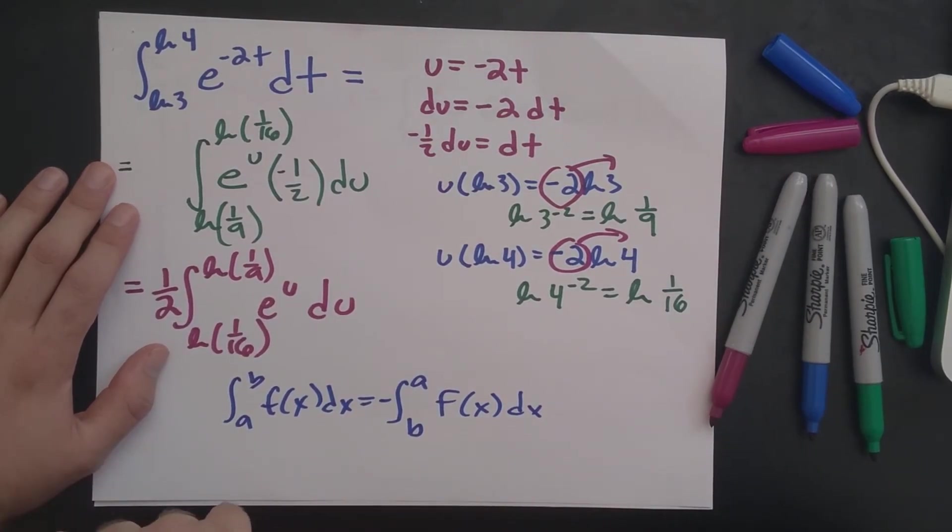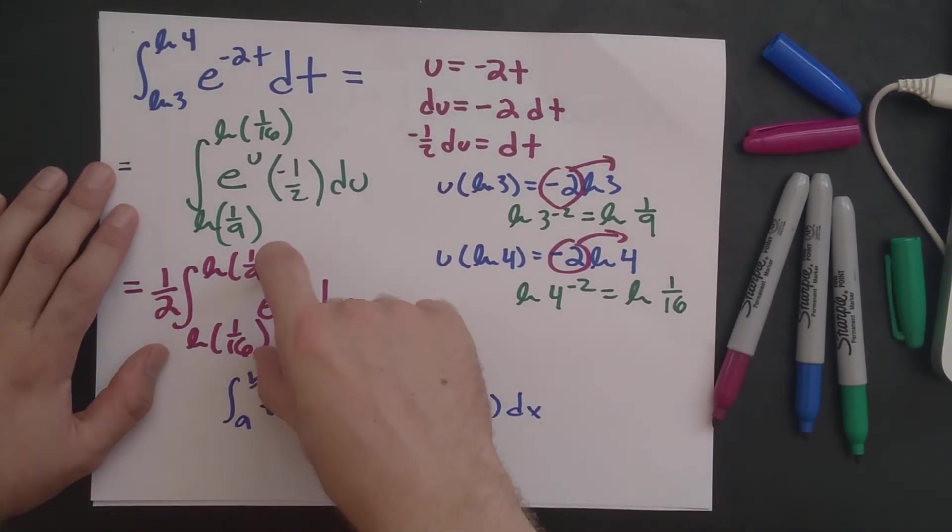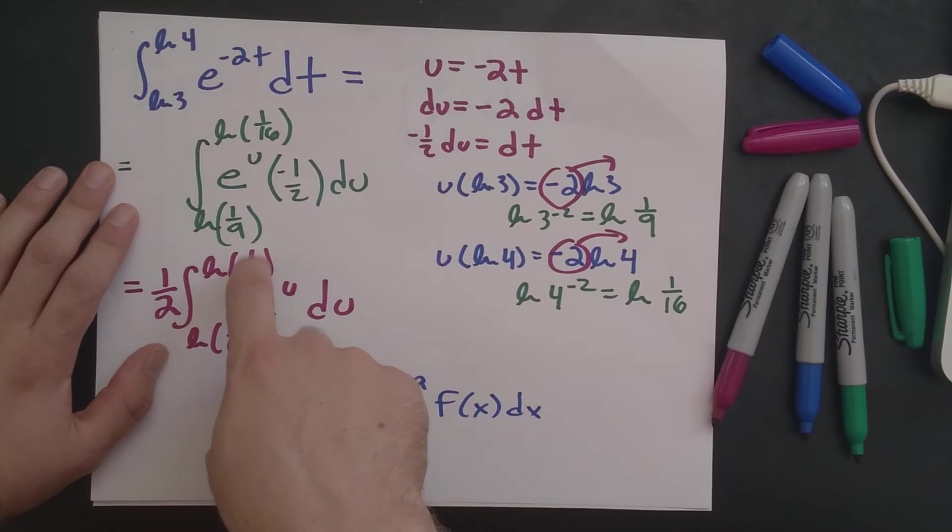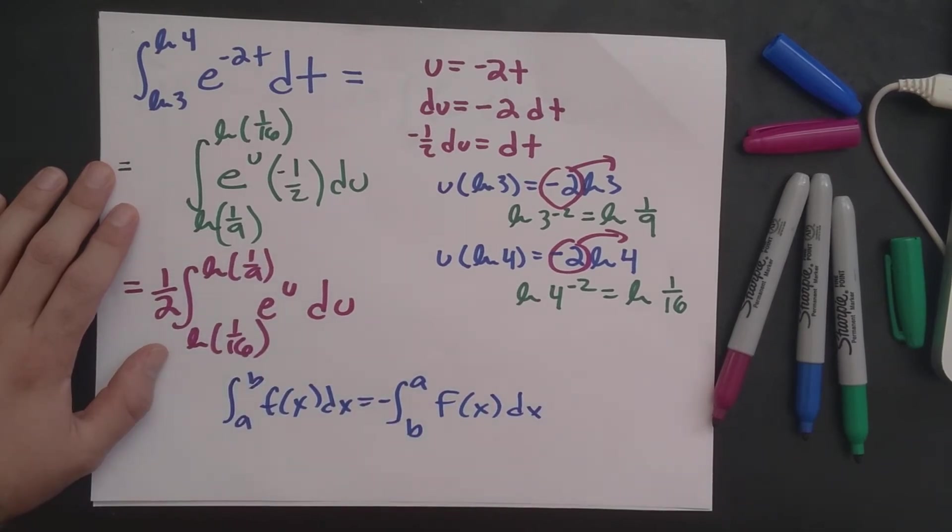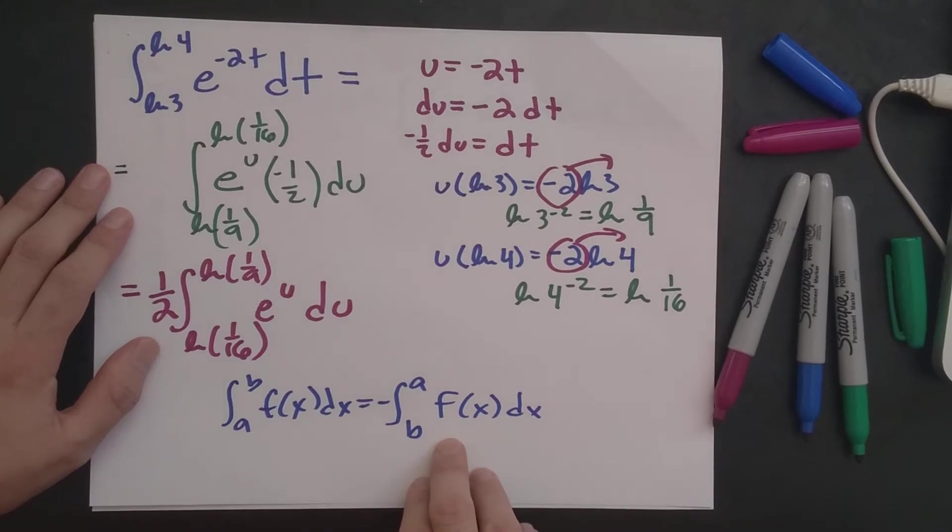There's no more natural reason to have the bounds like this than the bounds like this here. Either one works. I guess this is the slightly more natural bounds here because this bound would be smaller than this bound here. But I guess the principle is we can make this switch, and we have to match what our answer choices were. So that's why I made the switch.